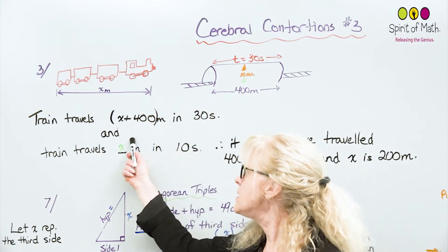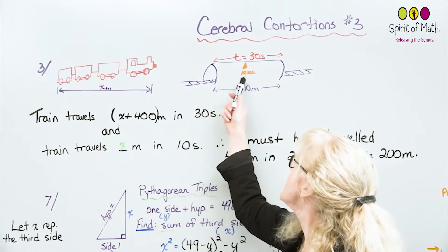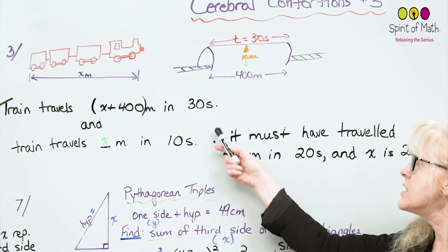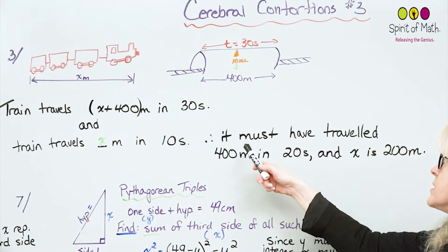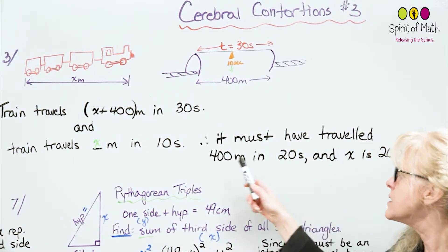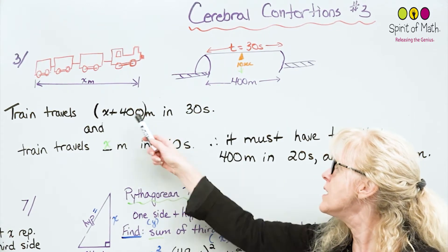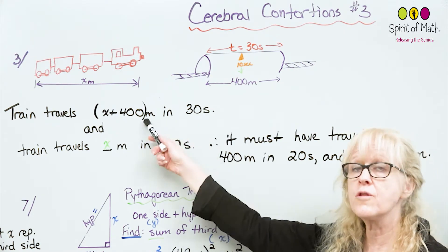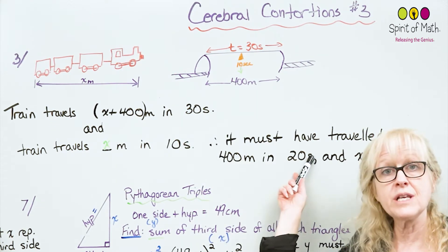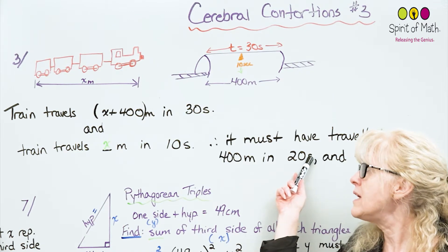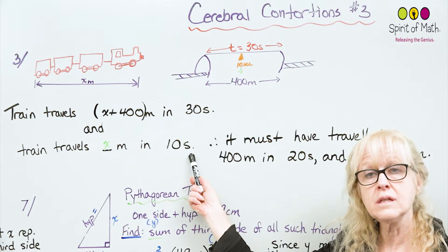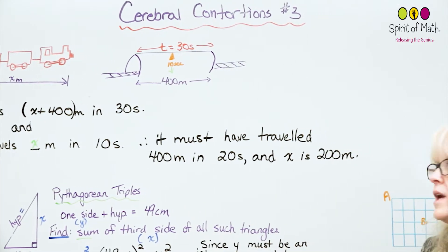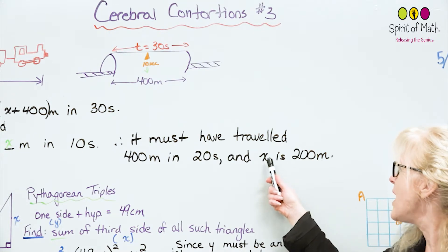That's 30 seconds in total, and the train travels x meters in 10 seconds, which we know because that's how long it was under the light. Those are two pieces of information you're given. Rather than writing a bunch of algebraic equations, it must have traveled 400 meters in 20 seconds — because if x meters takes 10 seconds, you take out 10 seconds and you're left with 20 seconds. So 400 meters in 20 seconds. In 10 seconds it's half that, so 200 meters — x is 200 meters.